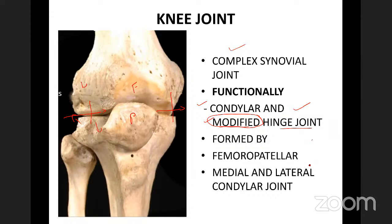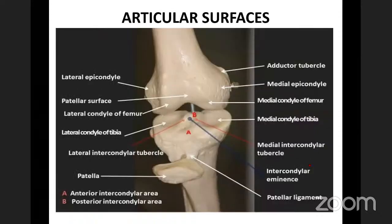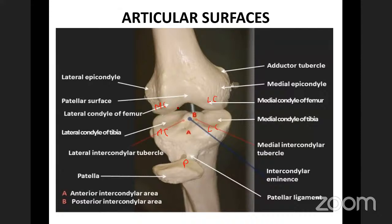The articular surfaces of the knee joint include the medial and lateral condyles of the femur, medial and lateral condyles of the tibia, the posterior articular surface of the patella, and the patellar articular surface on the femur, where the patella articulates with the femur to form the patellofemoral joint.